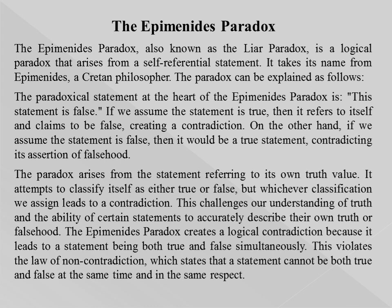if we assume the statement is false, then it would be a true statement, contradicting its assertion of falsehood. The paradox arises from the statement referring to its own truth value. It attempts to classify itself as either true or false, but whichever classification we assign leads to a contradiction.